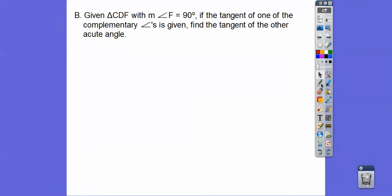Given triangle CDF with angle F being the 90-degree angle right there, so we have a right triangle right there. If the tangent of one of our complementary angles is given, find the tangent of the other acute angle. So it says the tangent of angle C is 0.4.